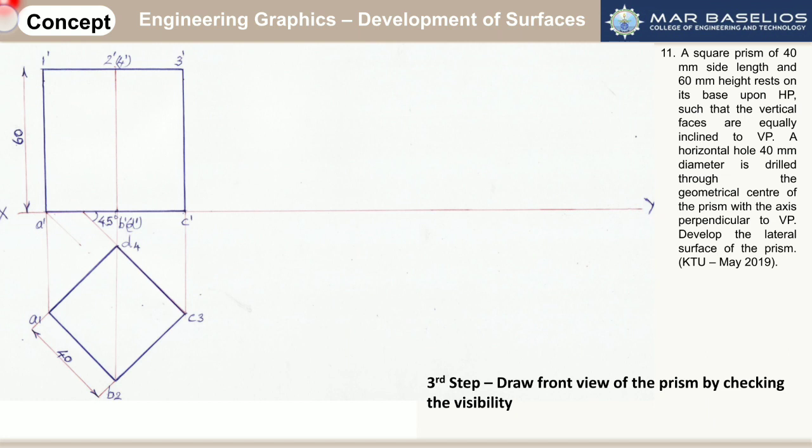The height of the prism is given — it is 60 mm. Next, we are going to draw the development of this square prism.